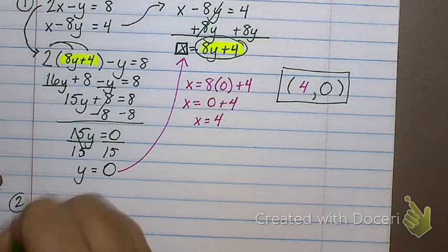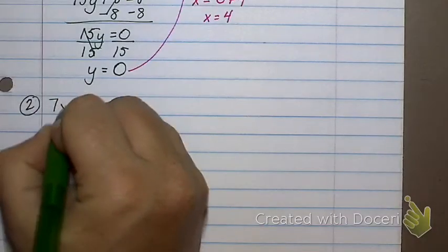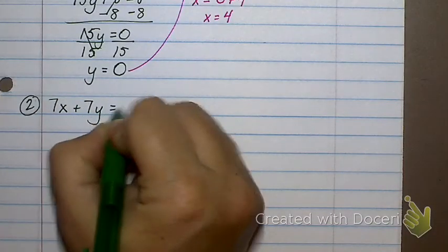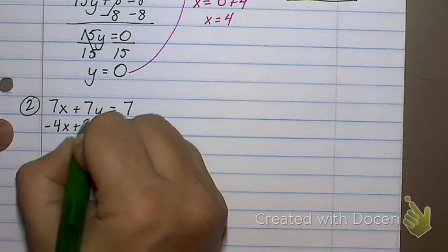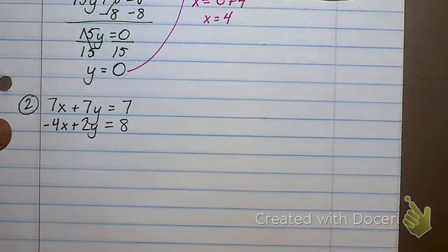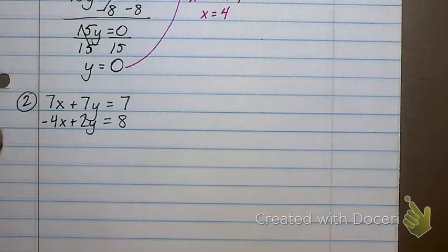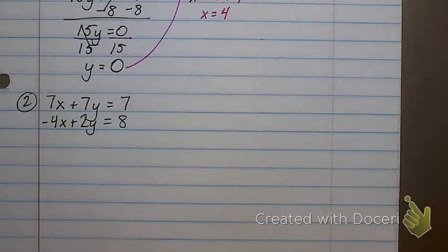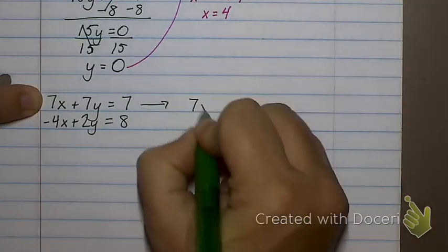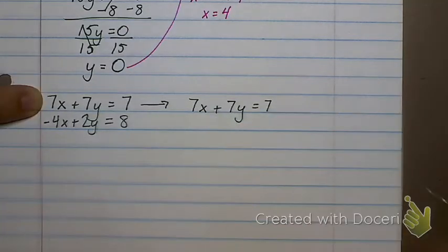Let's try this one. 7x plus 7y equals 7, and negative 4x plus 2y equals 8. Now what did I say about the letter you want to get by itself? It should not have a number in front of it, and it should if at all possible be positive. Well, all these have numbers in front of them, don't they? But does it look like one of them I might be able to get rid of the numbers? The first one right here. If I took that equation, 7x plus 7y equals 7. Let's say I wanted to get x by itself.